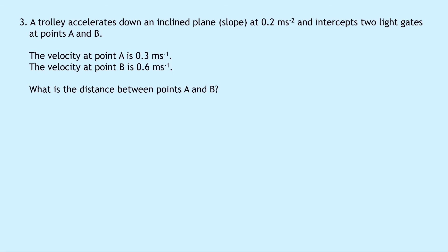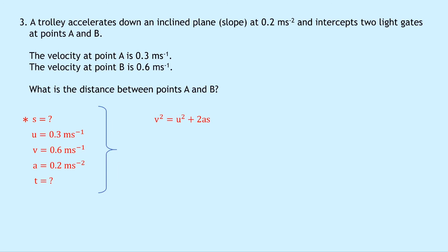Question three says that a trolley accelerates down an inclined plane slope at 0.2 meters per second squared and intercepts two light gates at points A and B. The velocity at point A is 0.3 meters per second, the velocity at point B is 0.6 meters per second. What is the distance between points A and B? Writing SUVAT down the left: S is unknown, U is 0.3 meters per second, V is 0.6 meters per second, acceleration is 0.2 meters per second squared, and time is unknown. Putting a star next to S, writing V squared equals U squared plus 2AS, substituting in gives 0.6 squared equals 0.3 squared plus 2 times 0.2 times S, which when simplified gives 0.4S equals 0.27. Dividing both sides by 0.4 gives S equals 0.675 meters.